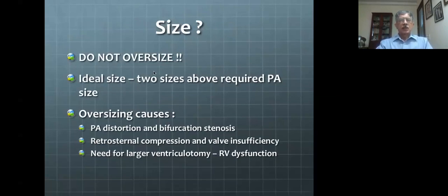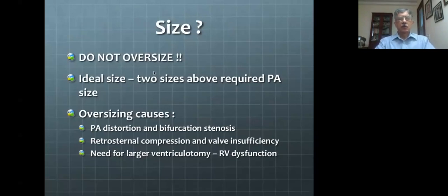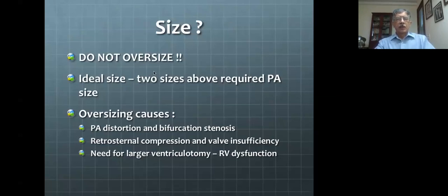For example, for a child who is 12 kilograms, the nomogram says the required pulmonary artery annulus diameter is 12 millimeters. The ideal conduit size would therefore be 16 millimeters — two sizes above. When you oversize, there is distortion of the bifurcation because the pulmonary arteries are not that large. When you suture the distal end of a very broad conduit into smaller pulmonary arteries, it will pull up the pulmonary artery distally and produce bifurcation stenosis. There is also a chance that a large conduit in a small chest will be compressed behind the sternum, causing valve insufficiency.